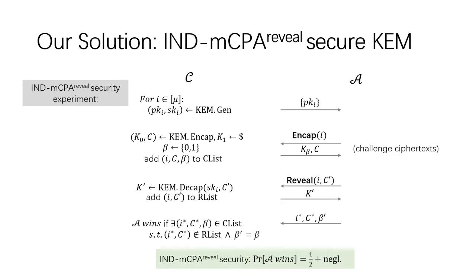To solve the commitment problem, we define a new security notion for KEM, IND-mCPA Security with adaptive reveals. This figure shows the experiment of IND-mCPA-reveal security. In the beginning, the adversary A receives mu public keys. It's allowed to ask two queries. With Encap queries, A receives a challenge ciphertext c, along with either an encapsulated key k_0 or a random key k_1. Here, each Encap query is answered with an independent and random bit beta. With reveal queries, A can get the encapsulated key for arbitrary ciphertext c prime, even if c prime is the challenge ciphertext outputted by the Encap query.